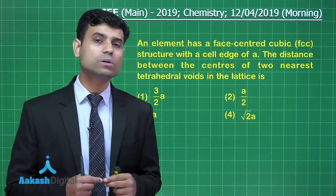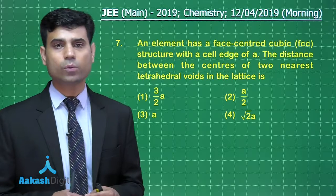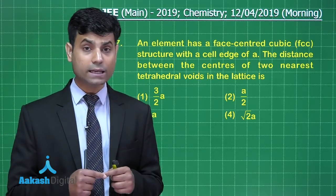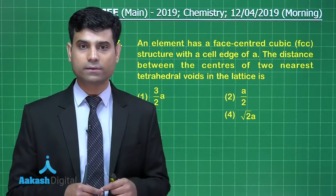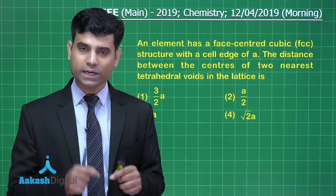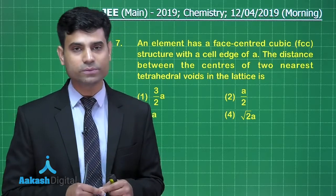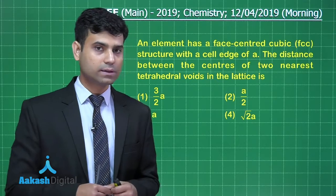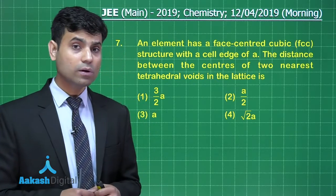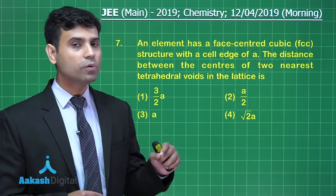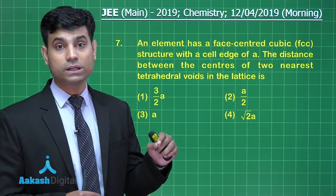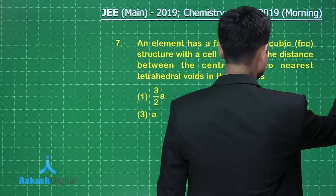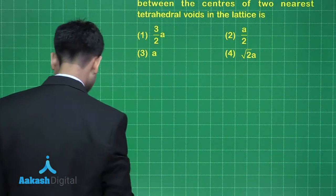If I talk about tetrahedral voids, these voids are located at the center of each octant. The octant is the eighth part of a cube. Now if I consider the top view of the face-centered lattice, let's see what the top view looks like.